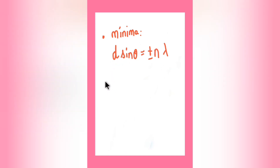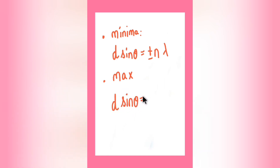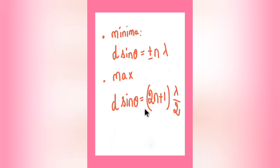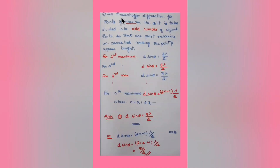For maxima, the condition is d sinθ = (2n+1)λ/2. Substituting integral values of n: n=1 gives the first maximum, n=2 gives the second maximum, and so on. For points of maxima in Fraunhofer diffraction, the slit is to be divided into odd numbers of equal parts so that one part remains and the others cancel.